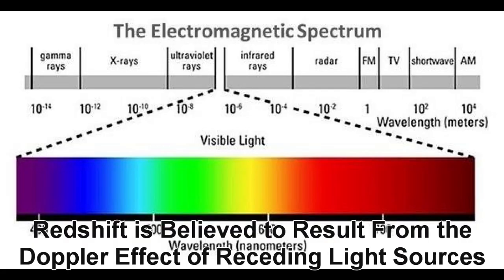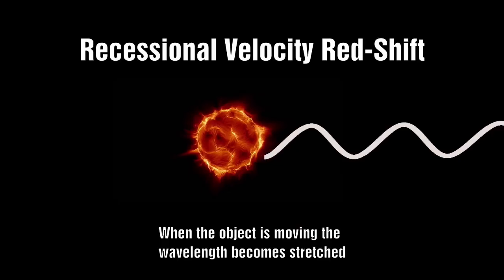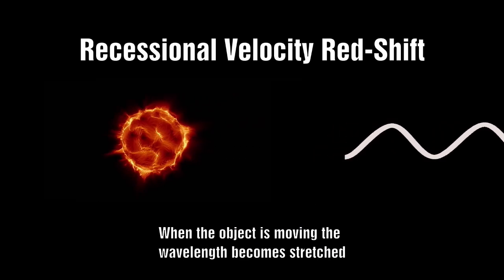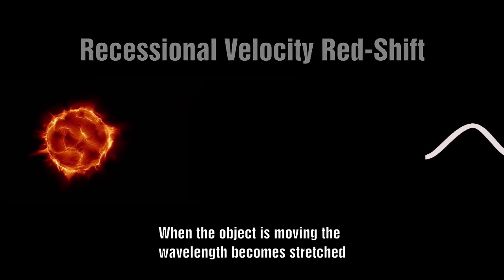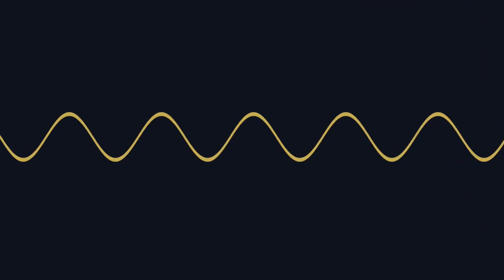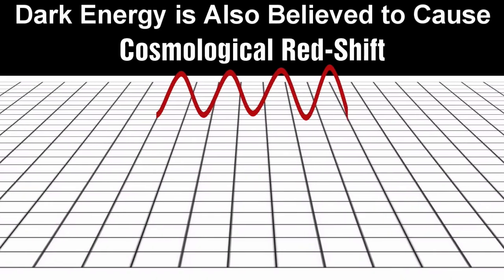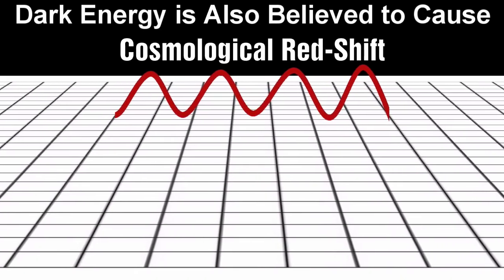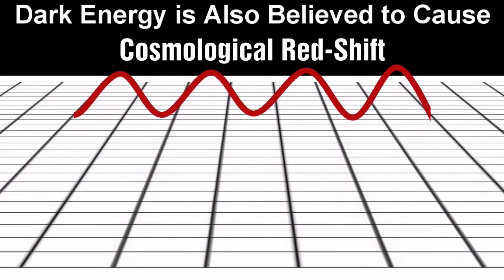Redshift is believed to result from the Doppler effect of receding light sources — when the object is moving, the wavelength becomes stretched. Dark energy is also believed to cause cosmological redshift.